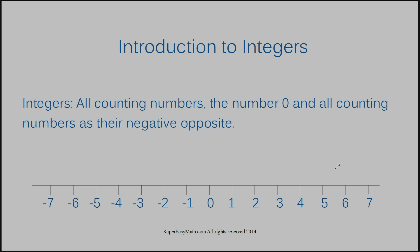When you're looking at a number line, you need to remember that no matter how the numbers look, all the numbers to the right of the number line are gradually getting larger and larger. The numbers to the left are gradually getting smaller. So just like six is less than seven, five is also less than seven, four is also less than seven, and negative two is also less than seven. Negative three is less than seven. Negative four is less than seven. That also means that negative four is less than negative three because it's on the left side of the number line.